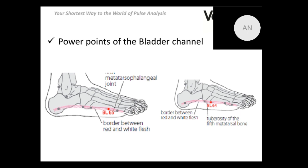Wind can damage the upper part of the body first, so conditions such as headache or even stroke may be connected to an excess of wind, related to the Taiyang energy axis and the common energy level. Point 65's cooling effect can be applied to those conditions. The common energy level can be measured using the VedaPulse device, where it appears as the Total Power index among the indices in the indices step.